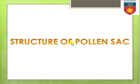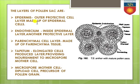That next portion is the structure of the pollen sac. In the structure of the pollen sac, the following layers are present: the outer one is commonly known as epidermis, next is endothesium, third is the parenchymal cell layer, next is tapetum, and the fifth one is the microspore mother cell. Let's see what each of these specific layers signifies.